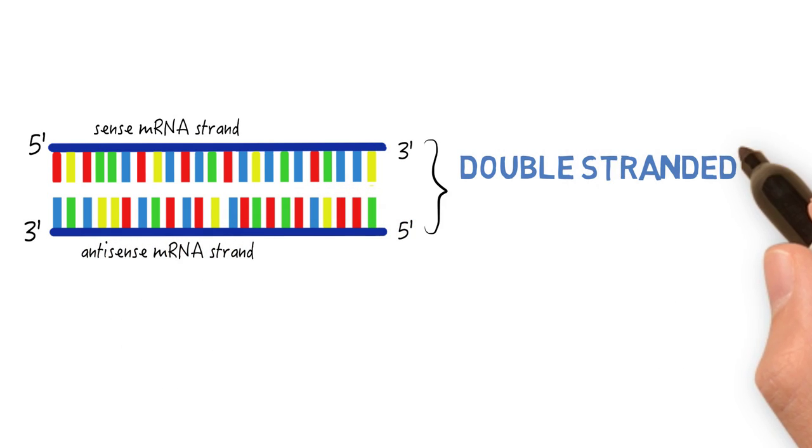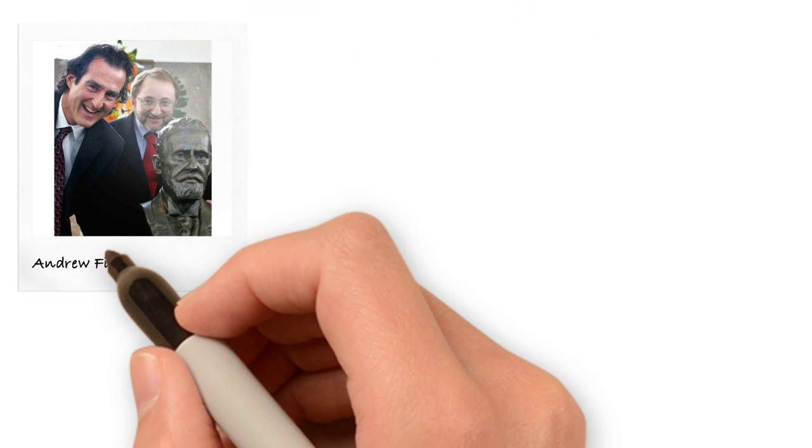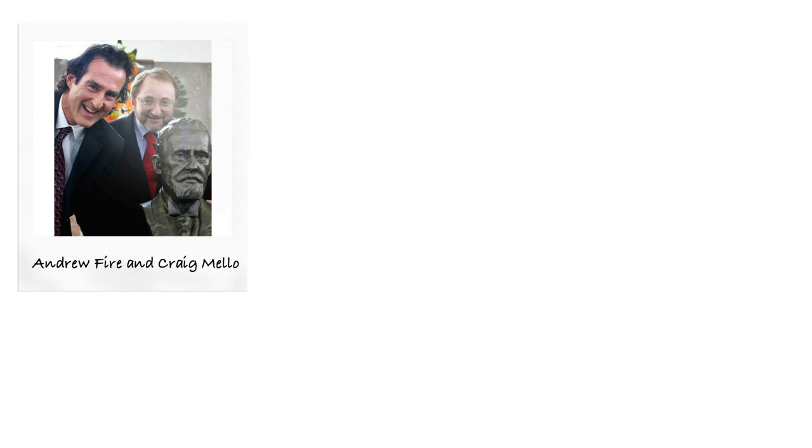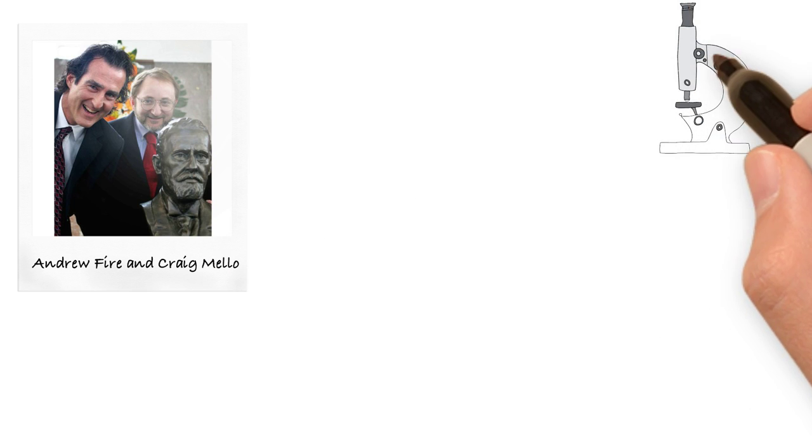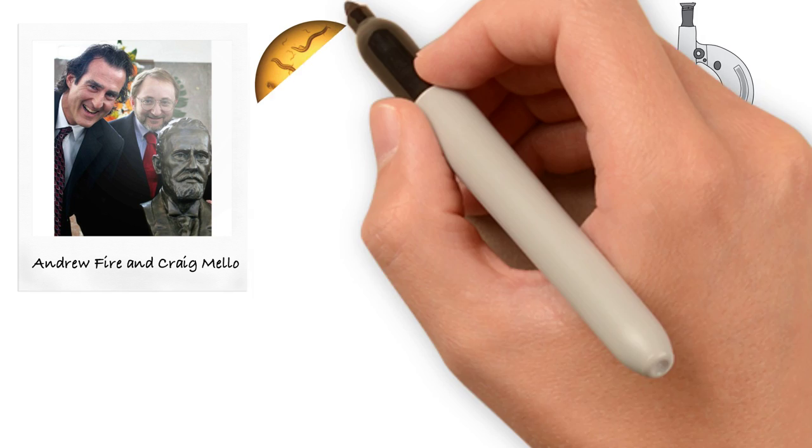So how does RNAi relate to all of this? Well, it was first discovered in eukaryotes by Andrew Fire and Craig Mello in 1998, who experimented on the widely loved biological model organism C. elegans, a one-millimeter long roundworm.